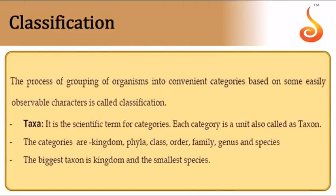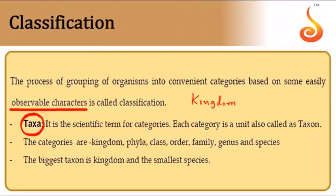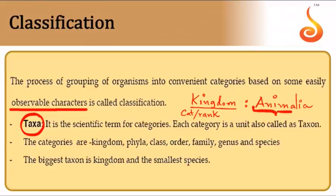We classify organisms to make our study more systematic. Classification is based on observable characteristics. A taxon is a group of real organisms, while a category or rank is an abstract term determining the position of a taxon in the Linnaean hierarchy. For example, Kingdom Animalia: 'kingdom' is the rank, and the group of real animals is the taxon.